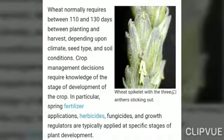Wheat generally requires 110 to 130 days between planting and harvesting, depending on climatic conditions, seed types, and soil conditions. Early maturity varieties require around 110 days, and late maturity varieties require 130 to 140 days.